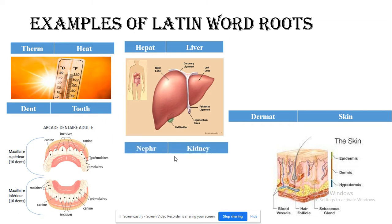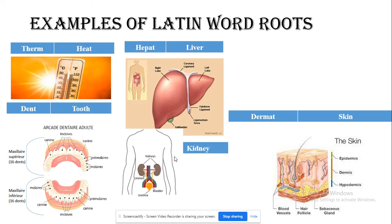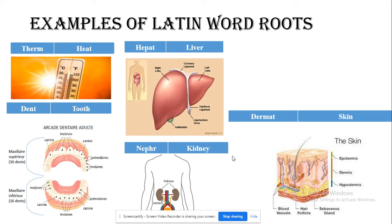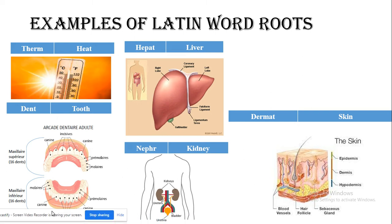'Nephr' means kidney. Anything related to the kidney uses 'nephr'. For example, 'nephrology' is the study of the kidney, and 'nephritis' means inflammation of the kidney. Whenever you see 'nephr', it means the term is related to the kidney — sometimes a prefix comes before it or a suffix after it, but 'nephr' always indicates the kidney.